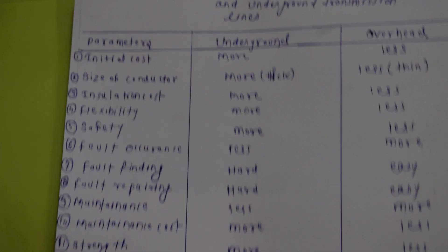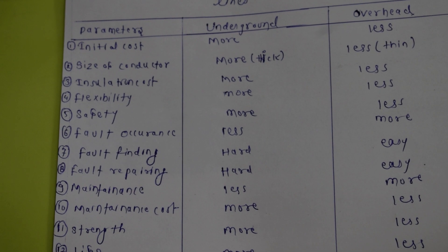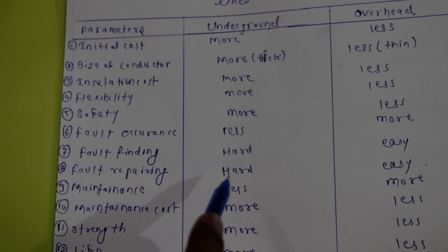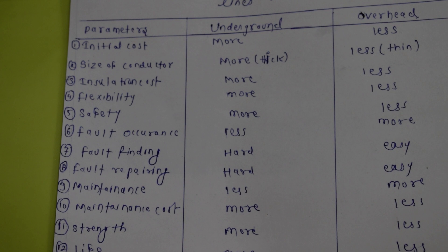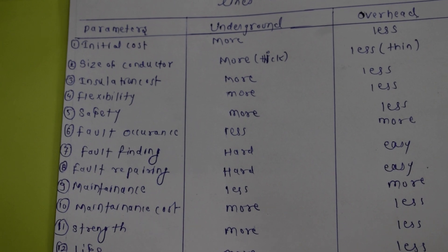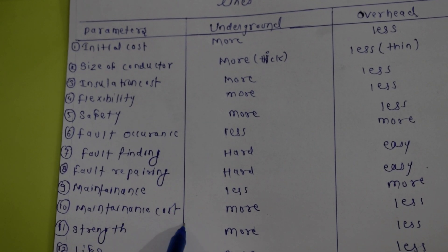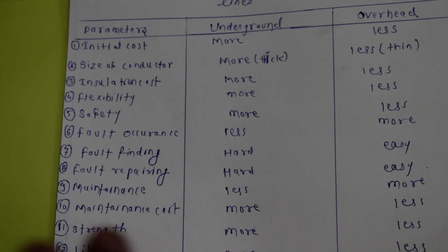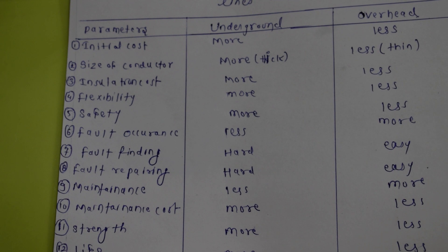The ninth point is maintenance. There is no distraction in the underground, so maintenance requirements are low. However, the maintenance cost is more for underground and less for overhead. This is because if something goes wrong underground, we have to dig, fix, and re-apply everything, while overhead repair is much easier.